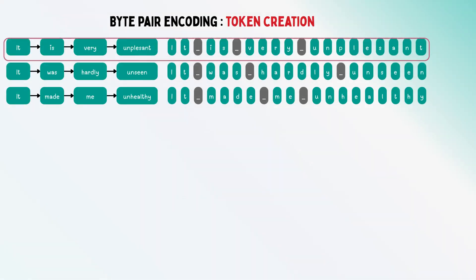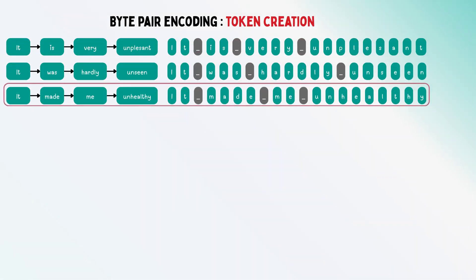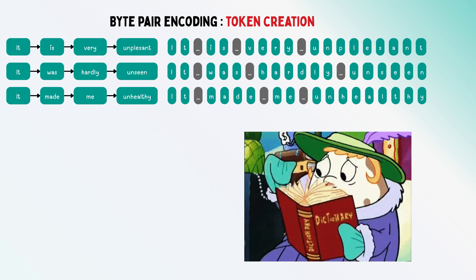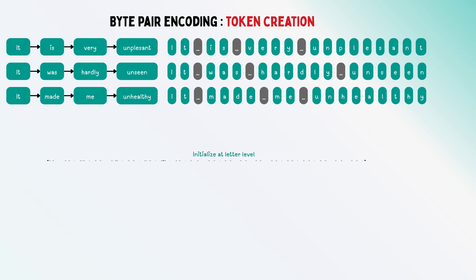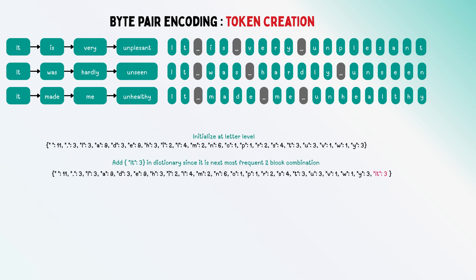If you have sentences like 'it is very unpleasant,' 'it was hardly unseen,' 'it made me unhealthy'—and we want to create a dictionary of fixed size—first initialize with letters, then keep combining letters to form words.